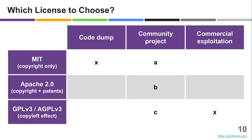What does that mean for the original scenarios or purposes? If you want to just dump your code, you don't really care that much — you just need to give people a way to try it — so I recommend you use the MIT license.